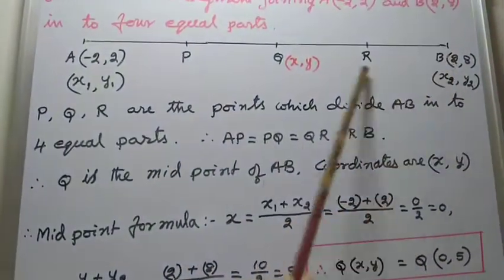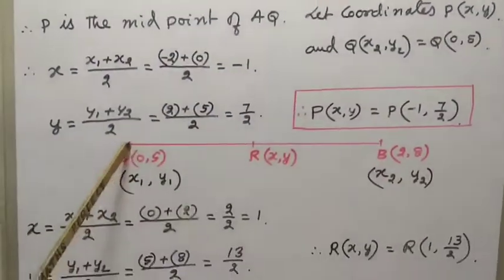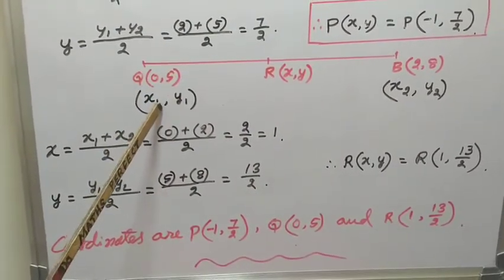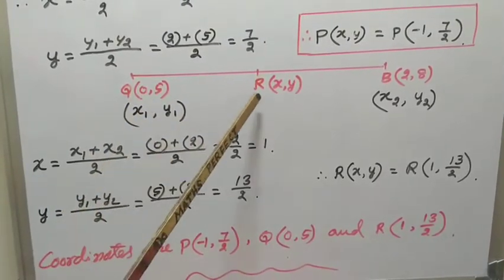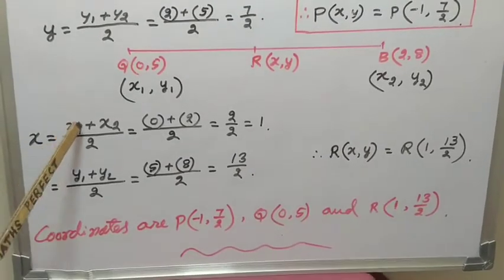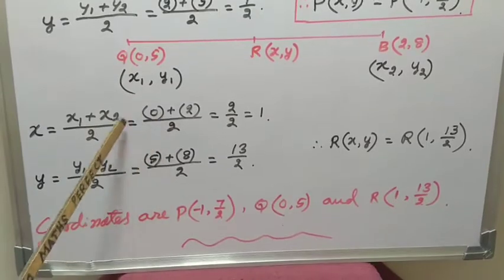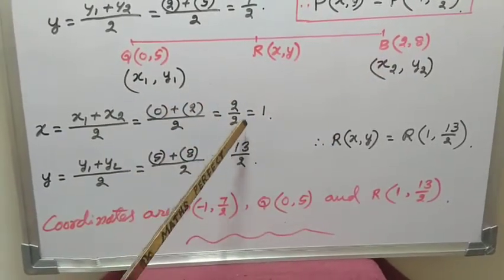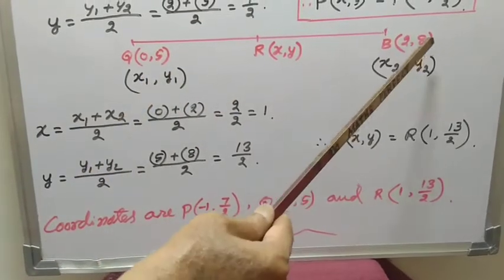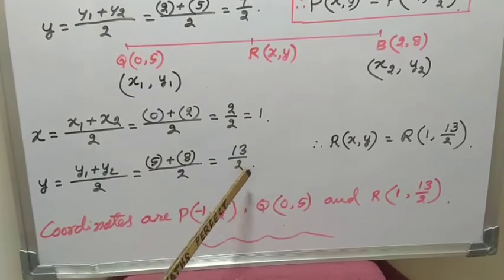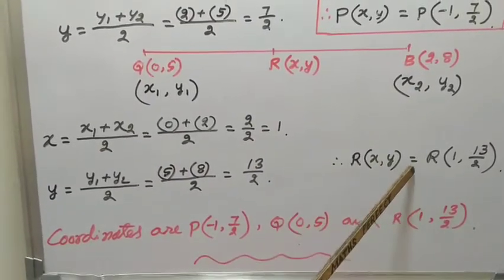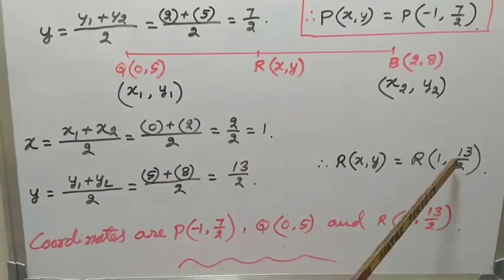Now let us find coordinates of R, where R is the midpoint of QB. Coordinates of Q are (0, 5) as X1, Y1, and B coordinates (2, 8) as X2, Y2. Let R coordinates be (X, Y). Using midpoint formula: X equal to (X1 + X2) divided by 2; X1 is 0 and X2 is 2, so 0 plus 2 equals 2 divided by 2 equals 1. Y equal to (Y1 + Y2) divided by 2; Y1 is 5 and Y2 is 8, so 5 plus 8 equals 13 divided by 2. Therefore X is 1 and Y is 13/2. Coordinates of R are (1, 13/2).